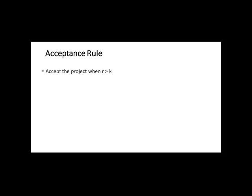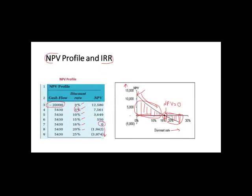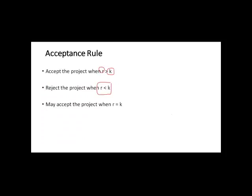The acceptance rule for IRR states: if your internal rate of return is greater than your cost of capital (the discounted factor), then only should you accept that project. If IRR is more than the cost involved, you will be generating profit or benefit. If IRR is less than the cost, you should not invest. If IRR equals the cost of capital (R = K), it will give neither benefit nor loss.